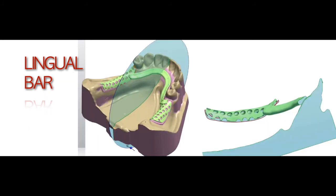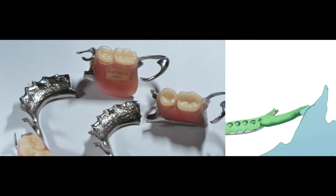Make sure the patient lifts the tongue up when measuring from the gingival margin to the bottom of the floor of the mouth. If you do not provide enough space from the gingival margin, the major connector will touch the gingival margin when the patient wears the partial denture. Once you remove the metal framework, you can see gingival recession caused by the major connector. Therefore, either provide enough space from the gingival margin, or position the major connector on top of the gingival surface.